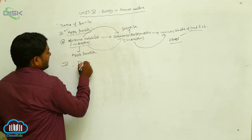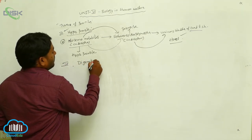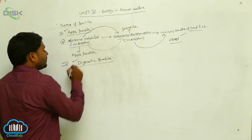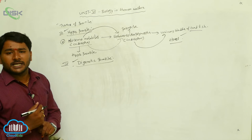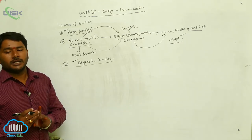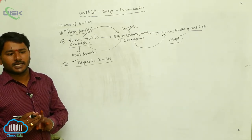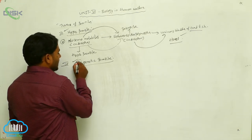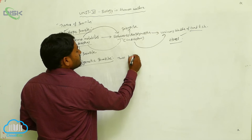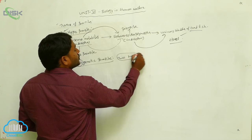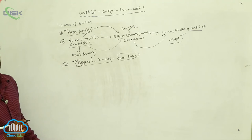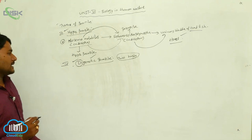The next type is the digenetic parasite. A parasite that completes its life cycle in two hosts is called a digenetic parasite. 'Di' means two, so parasites which complete their life cycle in two hosts are called digenetic parasites.